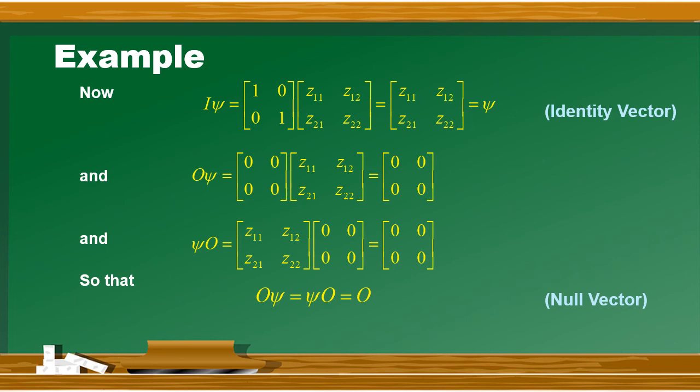तो यह addition और multiplication rules की properties complete हो गई हैं. अब हम quantum mechanics में जो important vector space है - Hilbert space - उसकी तरफ आते हैं.